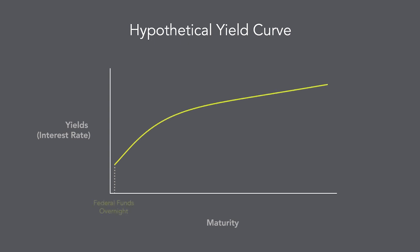One is the effective federal funds rate, which is an overnight rate at which banks lend money to each other. We also looked at longer-term interest rates, such as the yields for 10-year Treasury bonds.